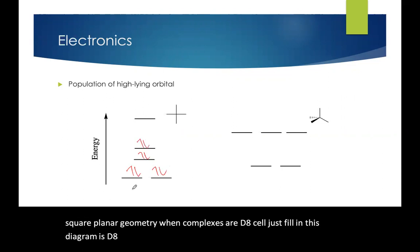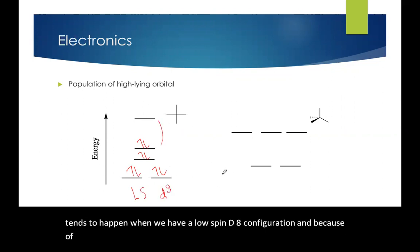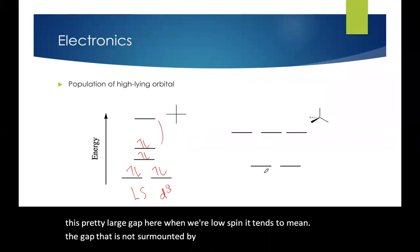This tends to happen when we have a low spin d8 configuration. And because of this pretty large gap here, when we're low spin, it tends to mean that's the gap that is not surmounted by electrons. Electrons stay below that large gap in tetrahedral geometries.